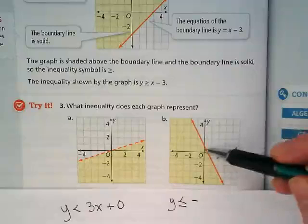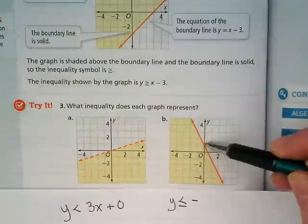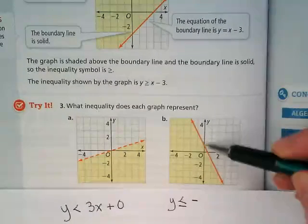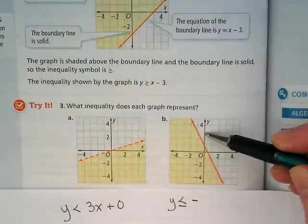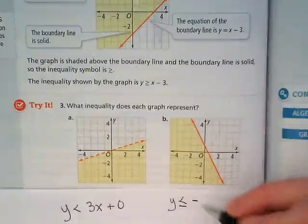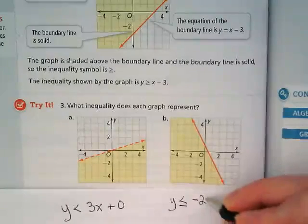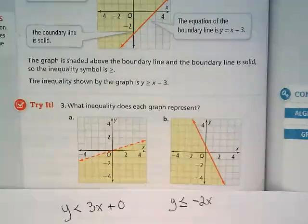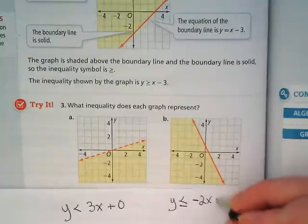And so we've got a point here and another point here. What's the difference? One, two, and the run is one. So what's our slope? Negative 2x, and where does it cross the y-axis? Plus one.